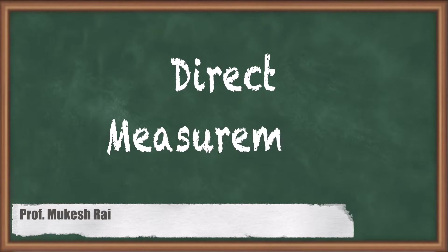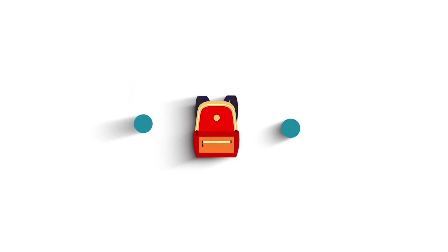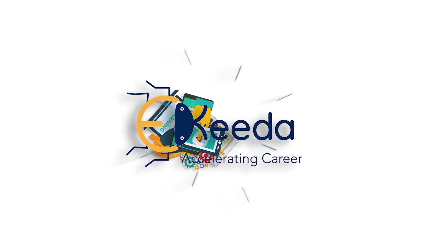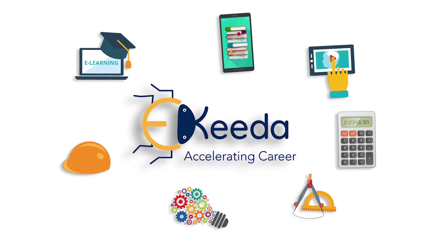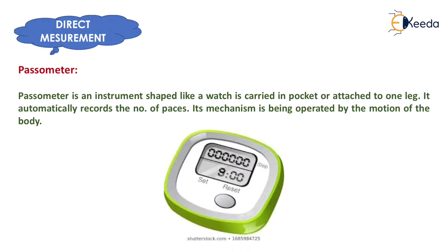Hello students, today we are going to study direct measurement. Direct measurement can be done by 4 types: passometer, pedometer, odometer, and pacing.